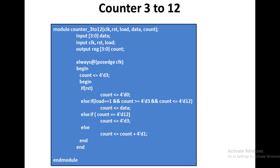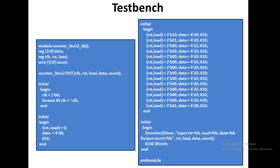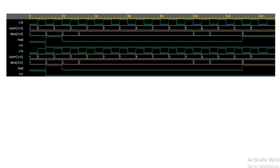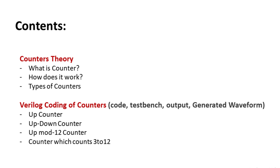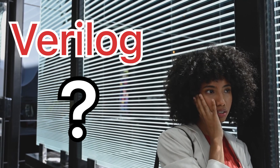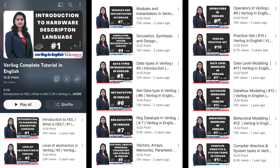You only need to check what condition to apply and when to reset or increment the count — that is the key for writing such counter code. The testbench provides reset, load, and data values to verify correct circuit operation. The output and final waveform confirm the counter working properly between 3 and 12. I hope counter coding is now clear. If your Verilog concepts need more clarity for interviews, check out the topic-wise Verilog playlist. We will meet in the next video.